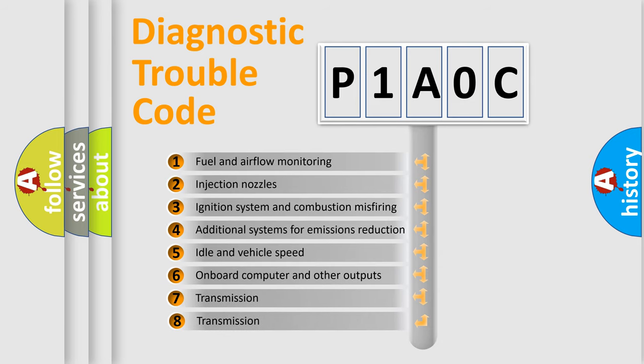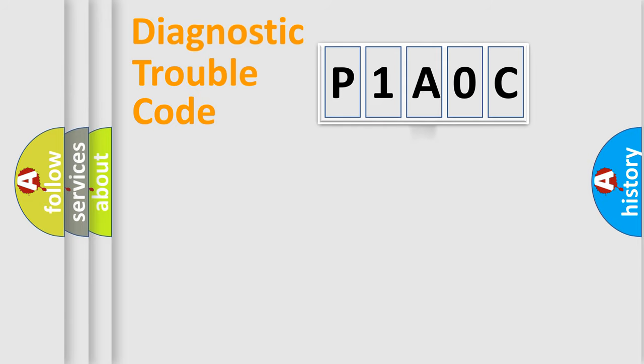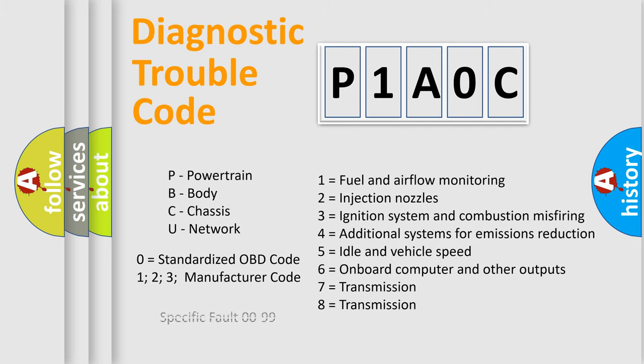The third character specifies a subset of errors. The distribution shown is valid only for the standardized DTC code. Only the last two characters define the specific fault of the group. Let's not forget that such a division is valid only if the other character code is expressed by the number zero.